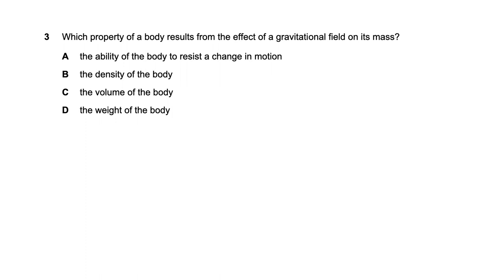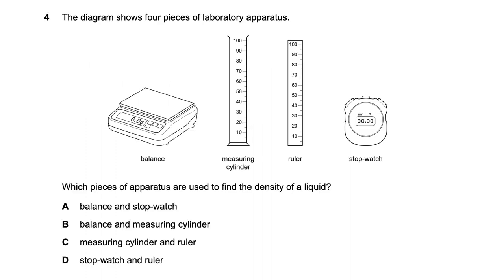Question three asks which property of a body results from the effect of a gravitational field on its mass. Weight equals mass times gravity, so weight is the answer. Volume is not affected by gravity, density is not affected by gravity, and the ability to resist a change in motion is an inertial property. So the weight of the body is the right answer.